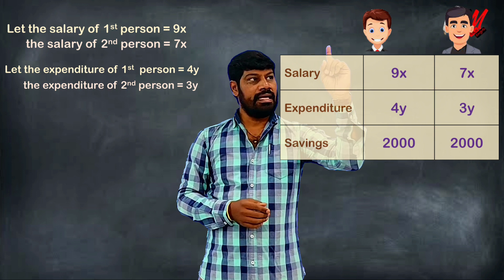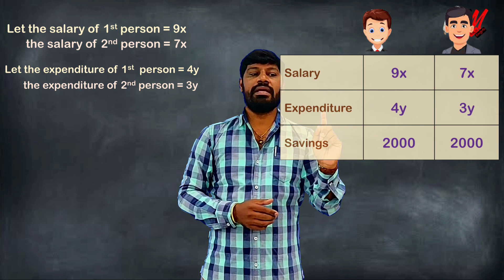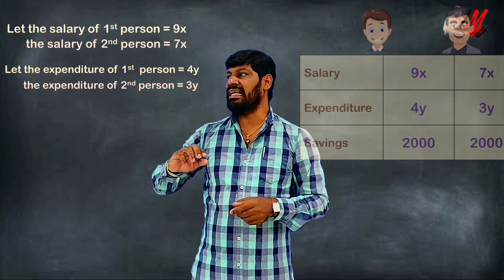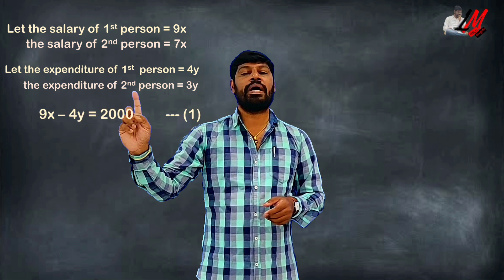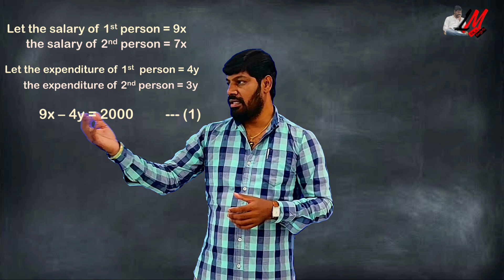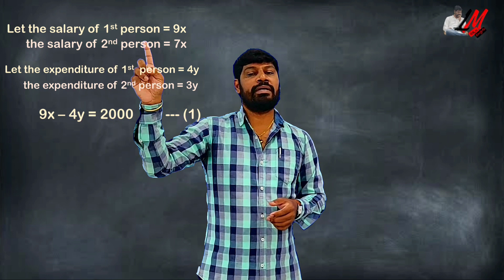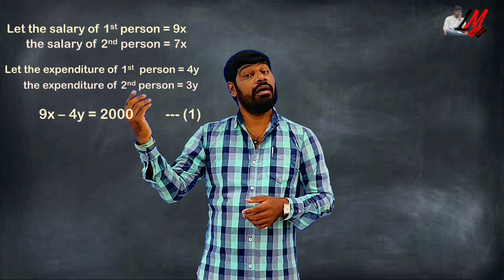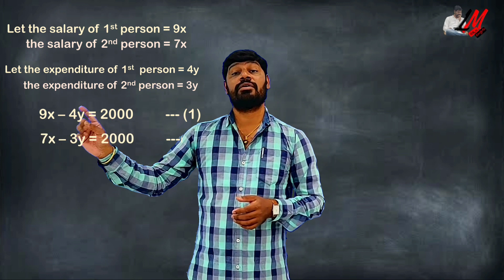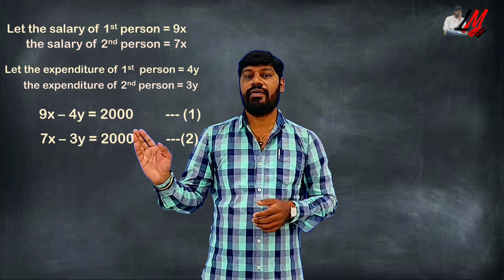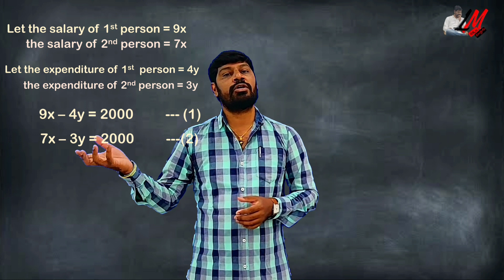For the first person: salary 9x, expenditure 4y, saving 2,000 rupees. So 9x minus 4y is equal to 2,000. For the second person: salary 7x, expenditure 3y, saving 2,000 rupees. So 7x minus 3y is equal to 2,000.